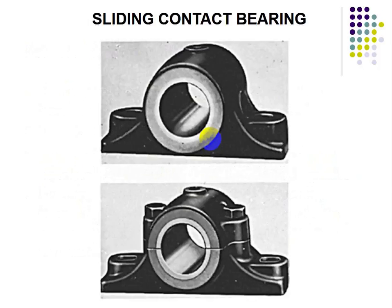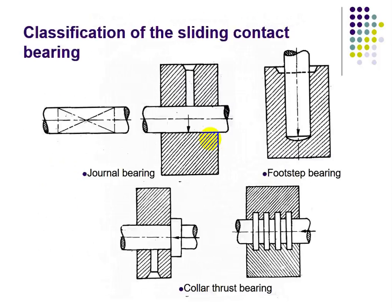Now let's discuss sliding contact bearings. In sliding contact bearings, the bearing and shaft are in sliding contact, so more friction is produced. Sliding contact bearings can be classified into three types: journal bearing, footstep bearing, and collar or thrust bearing.